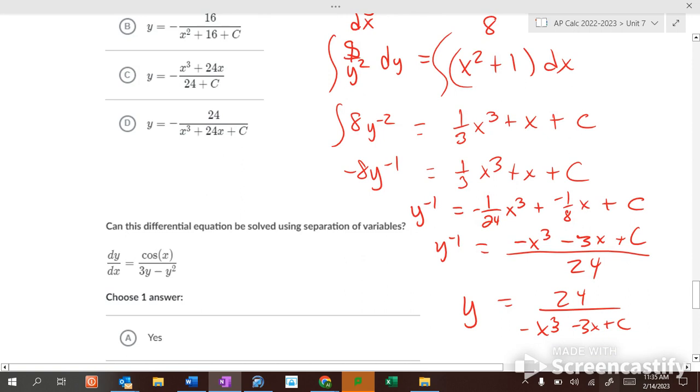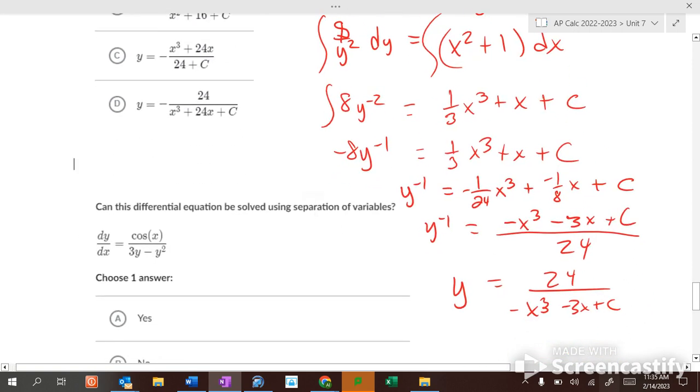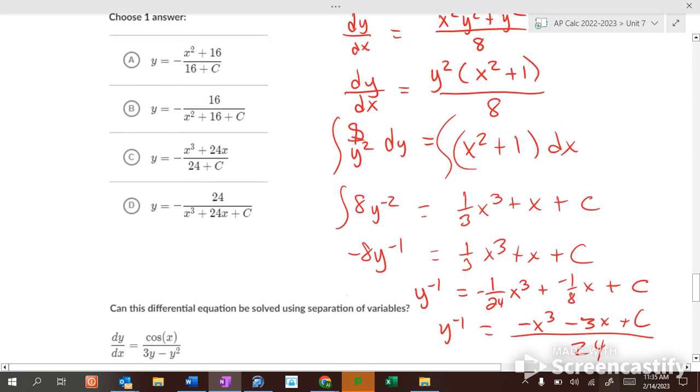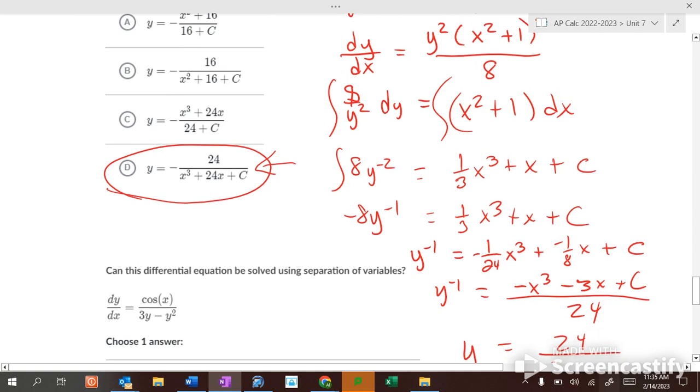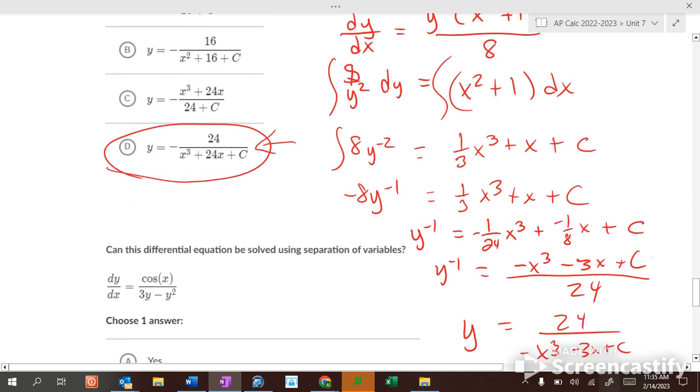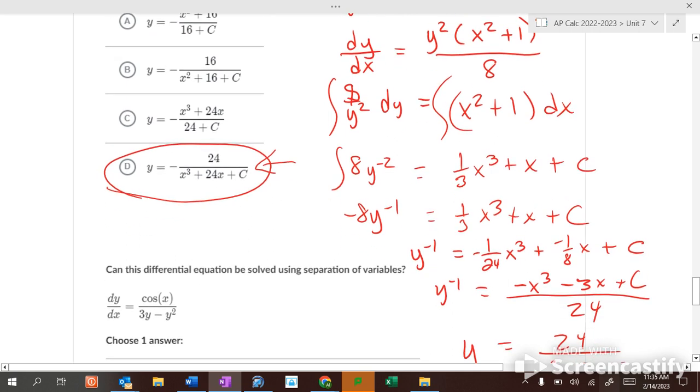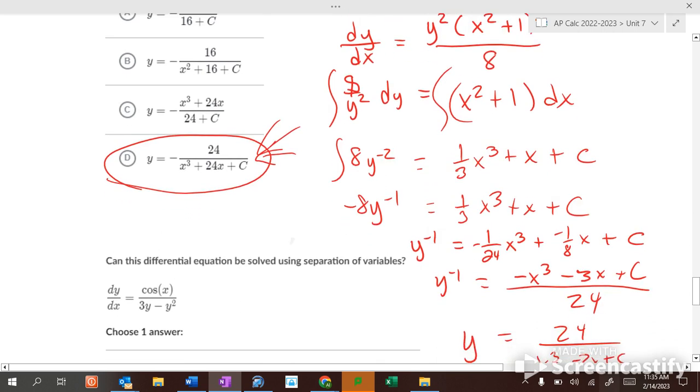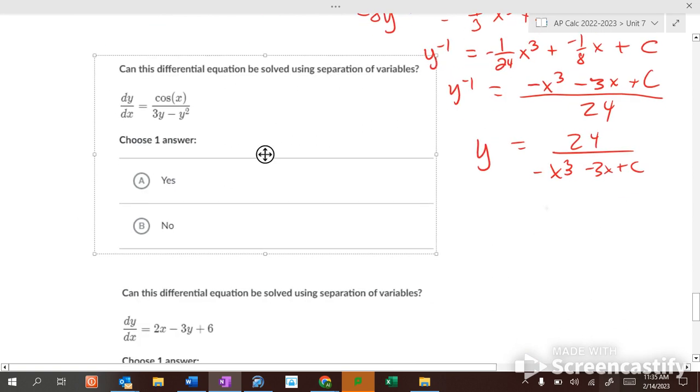Negative x cubed minus 3x plus c. Did I make a mistake with that 3? 24. Negative. Because it sure looks a lot like this one. I wonder if I made a little mistake somewhere along here somewhere. Because this looks like it. I think that's the right answer. We'll just go with that.